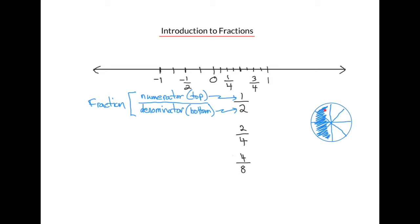And on our circle, it's shown as four parts out of the eight parts that are shaded. So the fractions 1 half, 2 fourths, and 4 eighths are all equivalent.